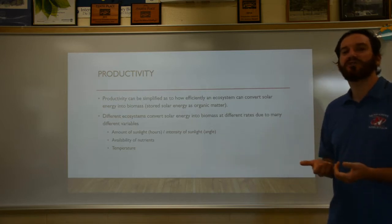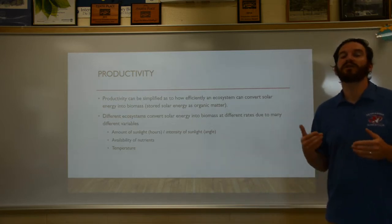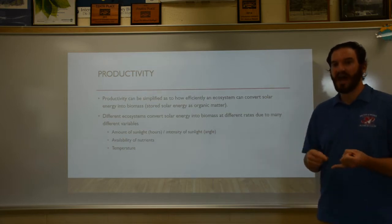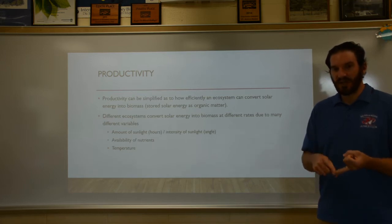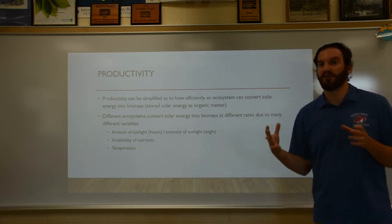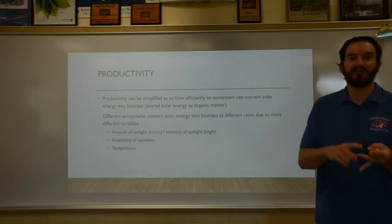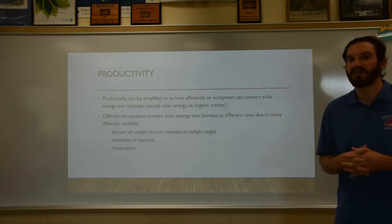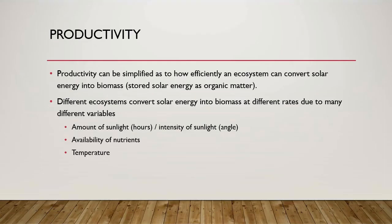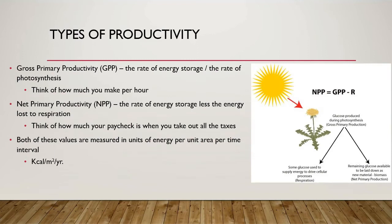Another factor is nutrient availability. For photosynthesis we need solar energy, water, and carbon dioxide, and we produce glucose and oxygen. But there are also lesser nutrients needed: nitrates, phosphates, and potassium, among other micronutrients. Additionally, temperature influences the rate of photosynthesis, so it's something we need to factor in when comparing ecosystems and how productive they are.